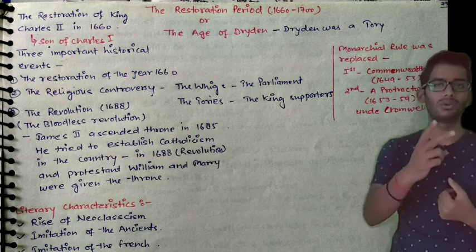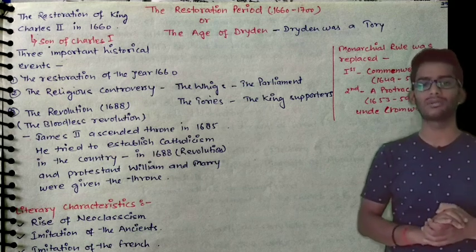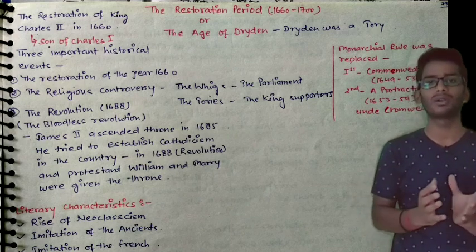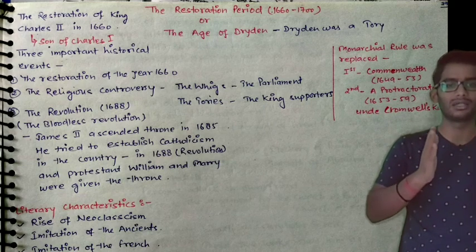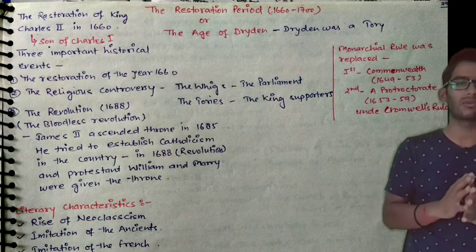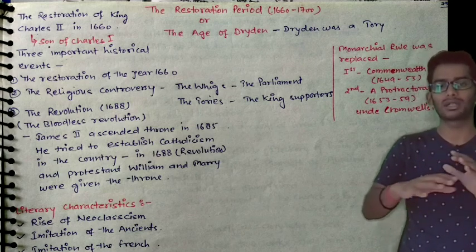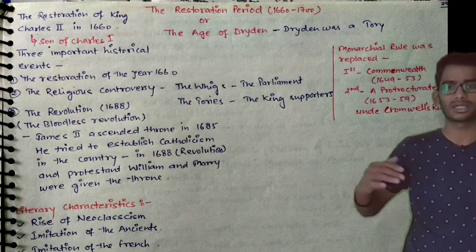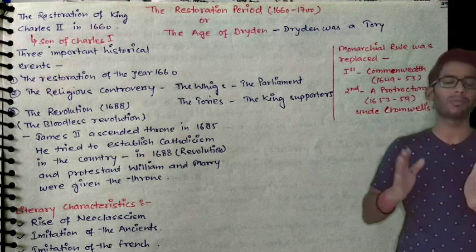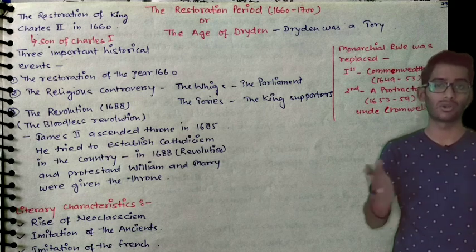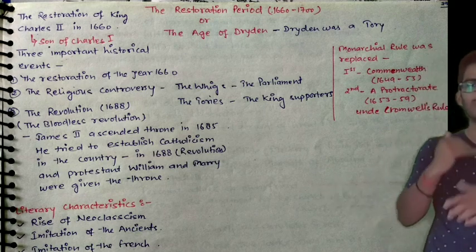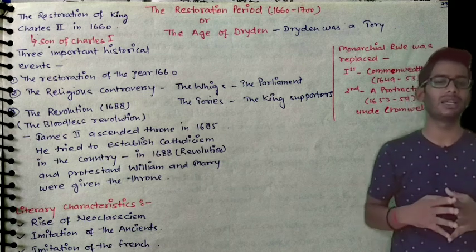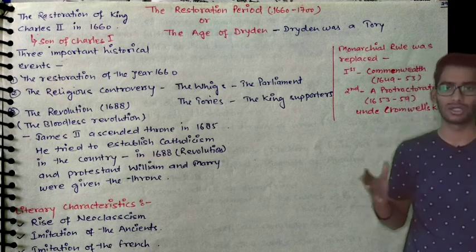There were two main religions: Catholicism and Protestantism. The majority at that time were Protestant. James II was Catholic, so he tried to establish Catholicism — Catholic churches and a Catholic state. But other people said no and opposed this decision. Later, Protestant William and Mary were given the throne, and this is called the Bloodless Revolution of 1688.